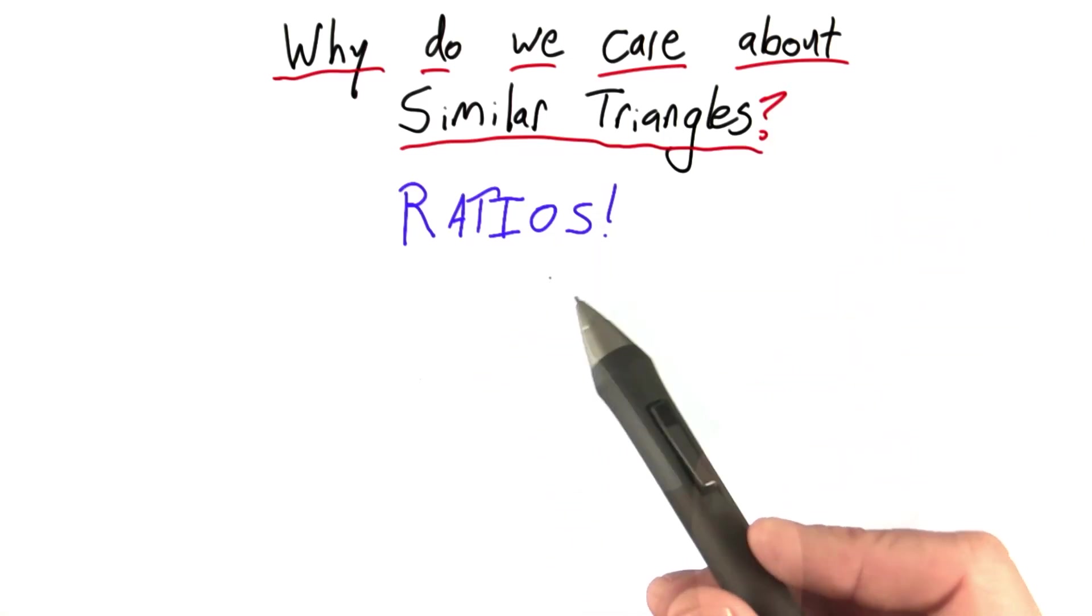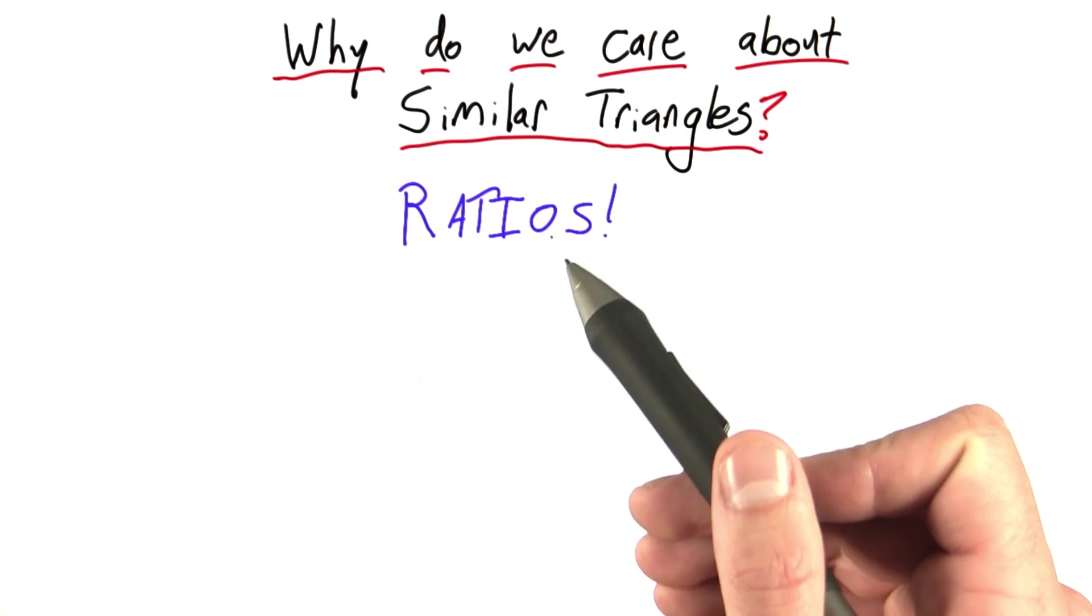I'm being a little cryptic here. What do I mean by ratios? Let's go back to our similar triangles to figure out what I mean.